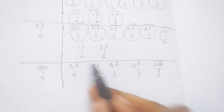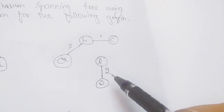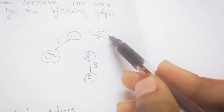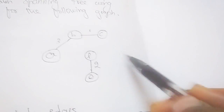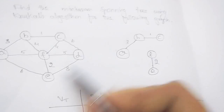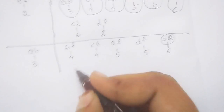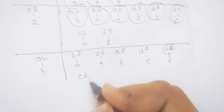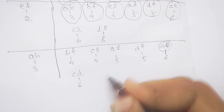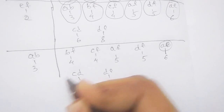CD does not form a cycle, so take CD with weight 6. DE does not form a cycle, so take DE with weight 8.